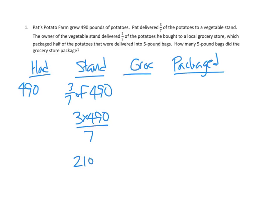Okay, so now we've got 210 pounds at the stand. Now the owner of the vegetable stand delivers two-thirds of the potatoes that he bought to the local grocery store. Okay, so two-thirds of 210. Again, pause for calculation. 140.